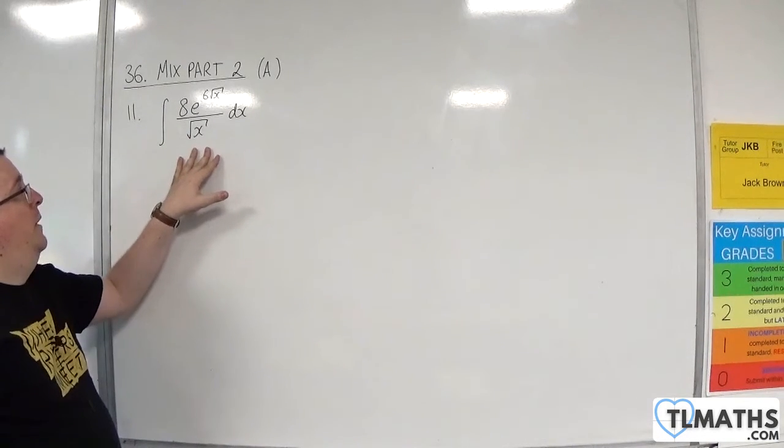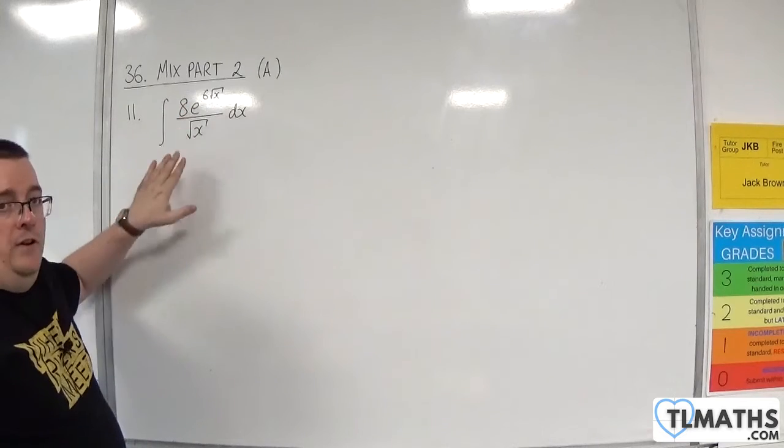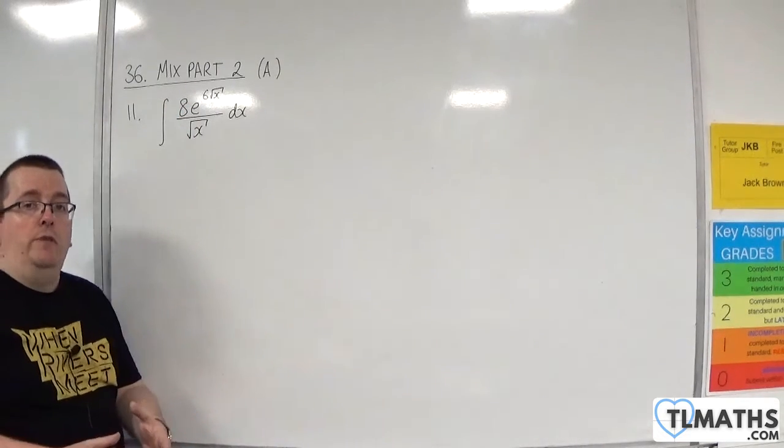So we've actually got a multiple of the derivative of the inside on the outside. That means I can do reversing the chain rule on this.